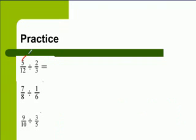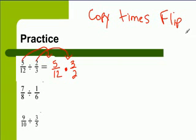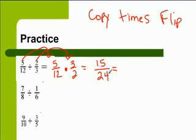So the first thing we're going to do is we're going to copy the first number, and then we're going to multiply and we're going to flip the second number — copy times flip. Then you just multiply: five times three is fifteen, and twelve times two is twenty-four. Remember, you need to simplify. So fifteen over twenty-four, using my calculator — fifteen, fraction key, twenty-four — equals five-eighths.